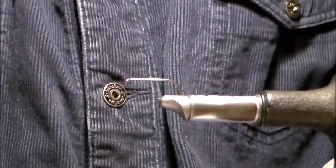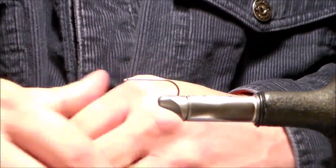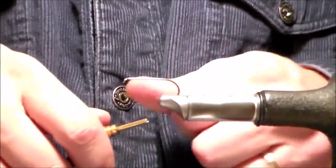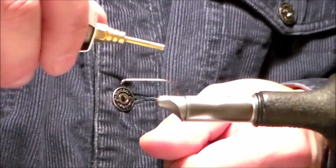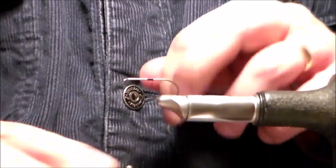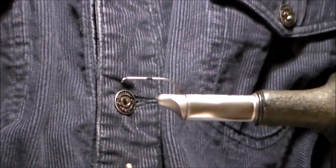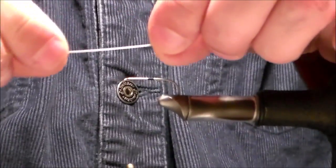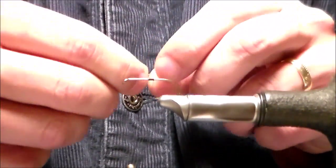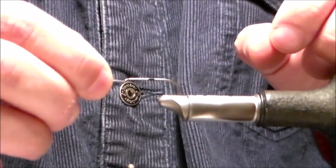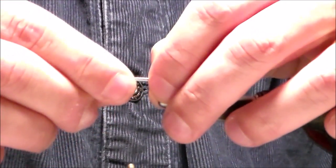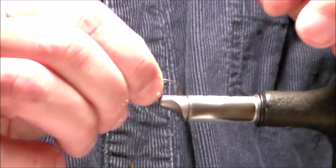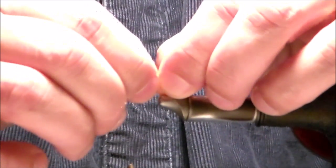We're going to start with the trailing hook, which is a Mustad 94840 size 4. We use our size A thread and we're going to start in the center of the shank, just half a dozen wraps or so to lock that thread into place. Then we have our monofilament, 40 pound monofilament cut at two and a quarter inches. We're going to thread this through the eye and extend it right down the shank of the hook, stopping just before where the hook itself starts to bend.